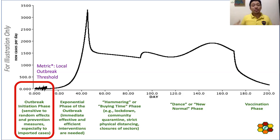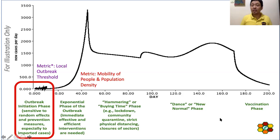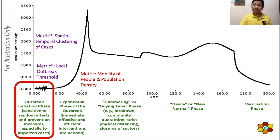For today, I'm just going to tell you the different metrics and we're going to have a separate lecture on how to compute these metrics. This is mostly an introductory part of the course in mathematical epidemiology specifically for COVID-19. With this, we can also have a metric on the mobility of people and population density. When people are mobile there could be many imported cases, and those imported cases can really start the outbreak if the density of people in certain places is very dense. We can also measure the spatial-temporal clustering of cases.